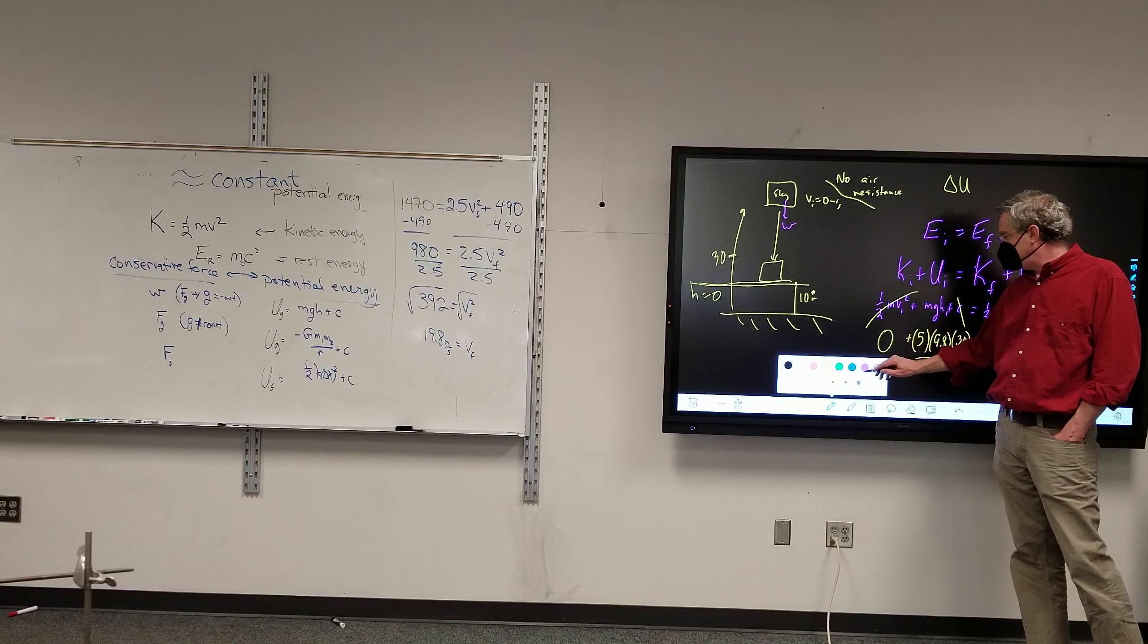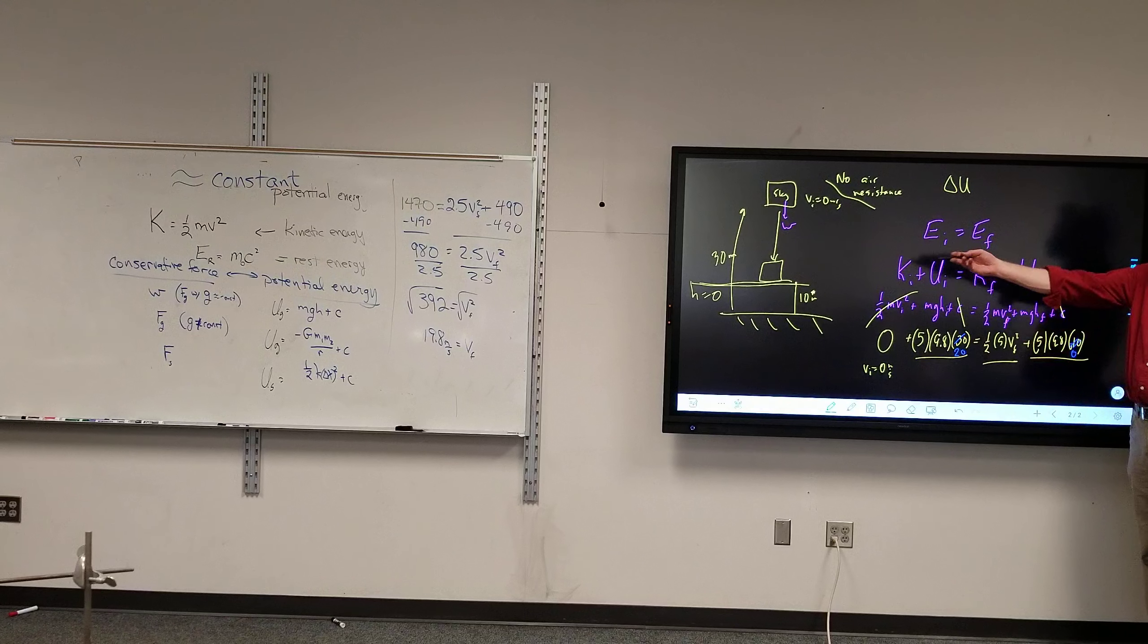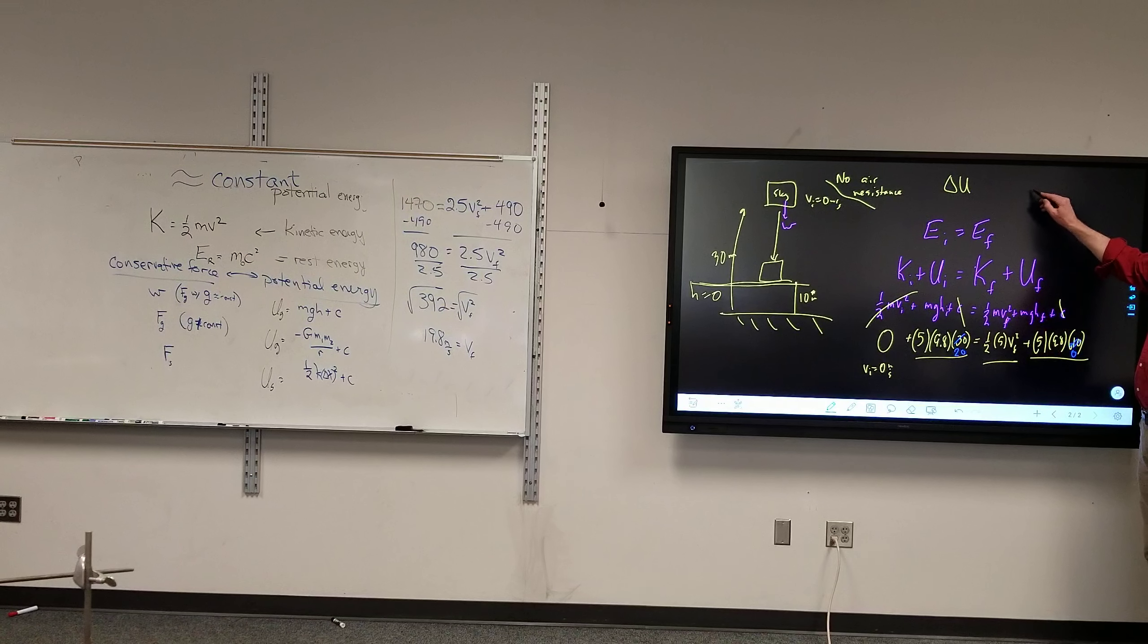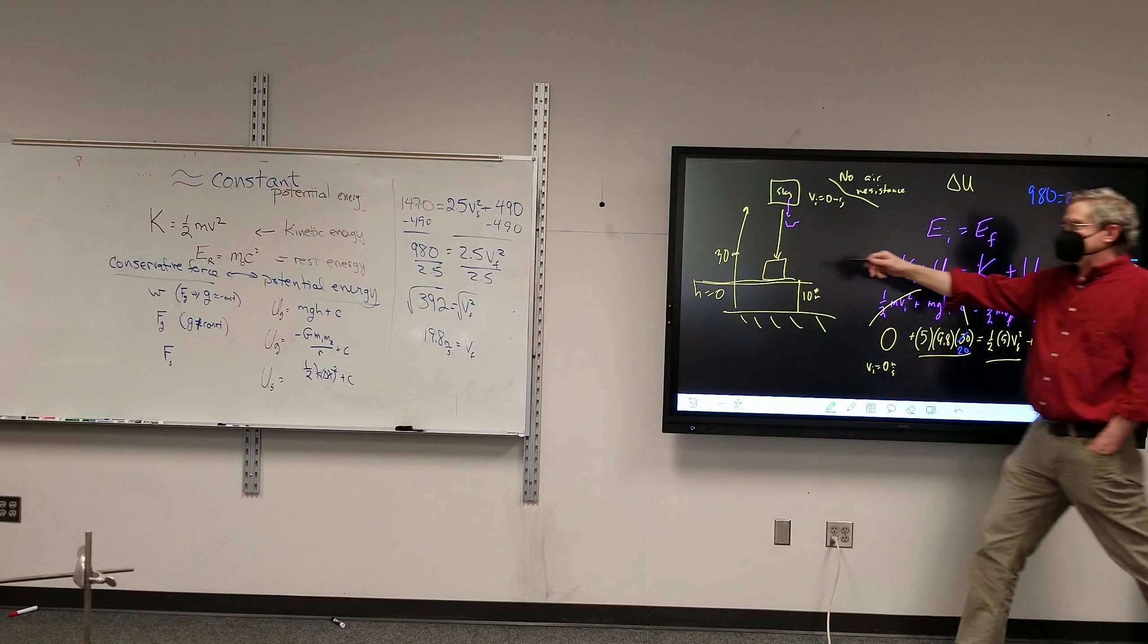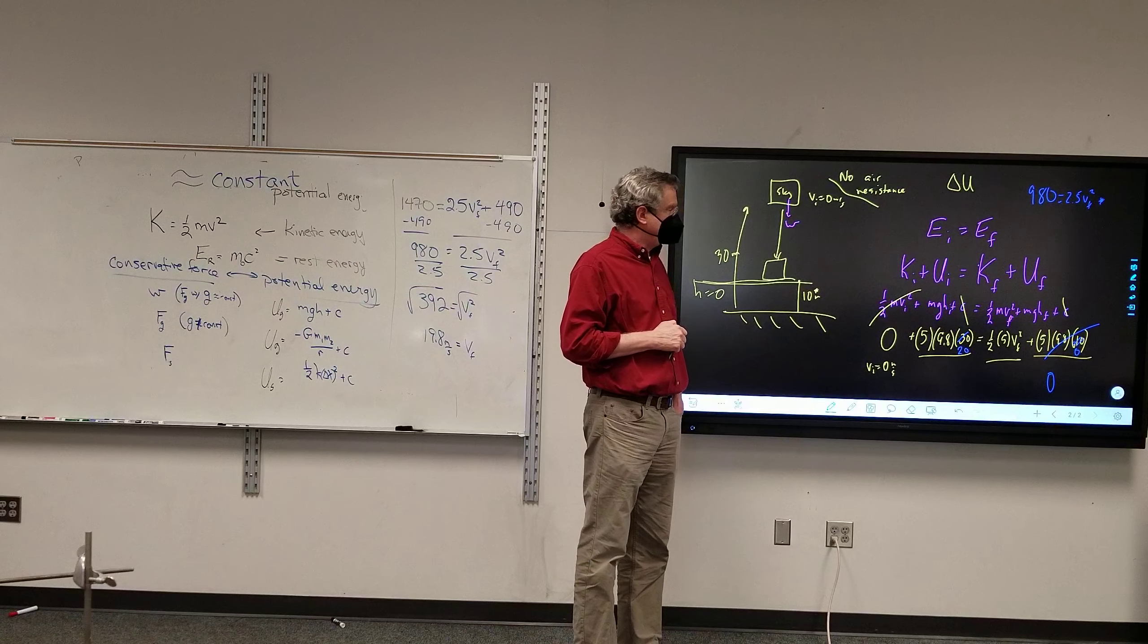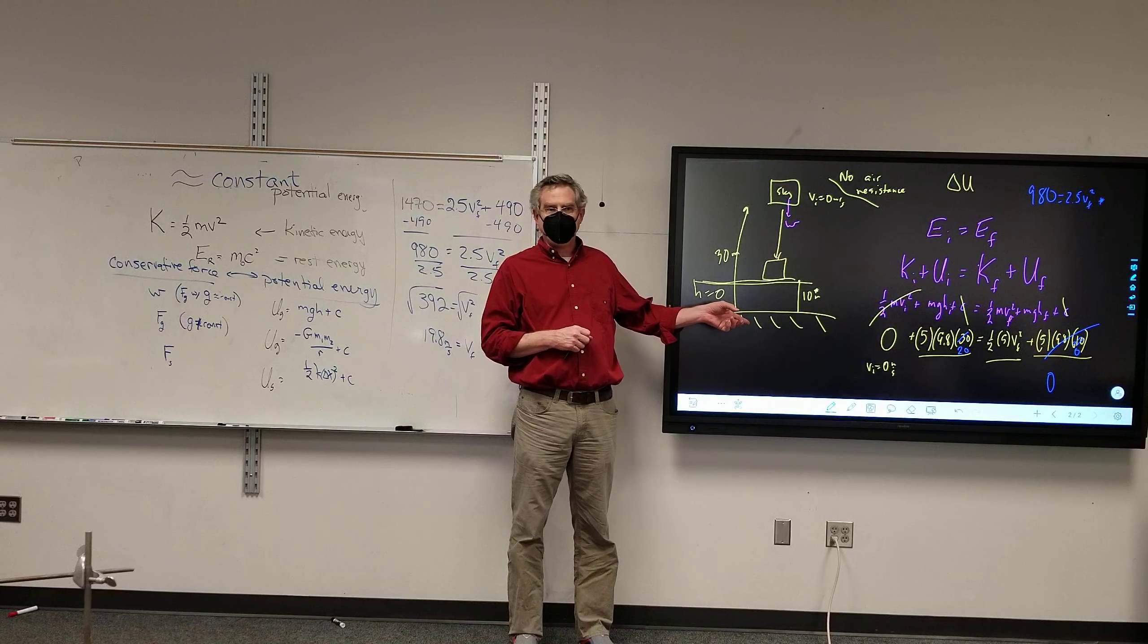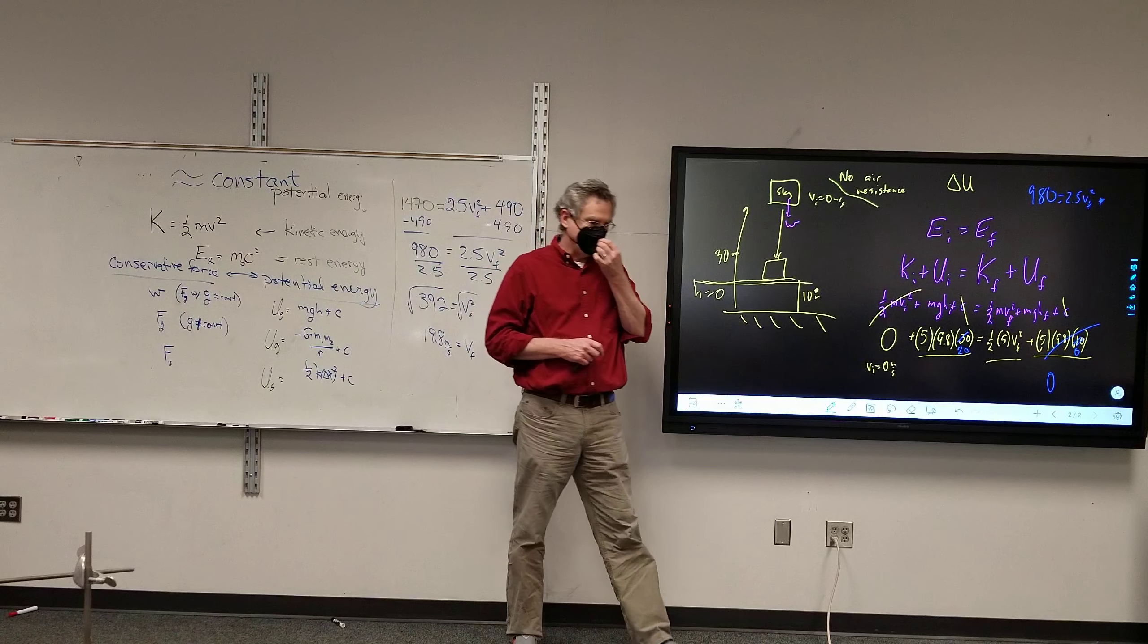What that does to my problem here is this is now 20 and this is now 0. My final height is right where I said h equals 0, which now makes this 980 equals 2.5 vf squared plus 0. By making h equals 0 where it's convenient, we simplify what we have to do. The position of the ground is irrelevant unless we go 100 kilometers up.